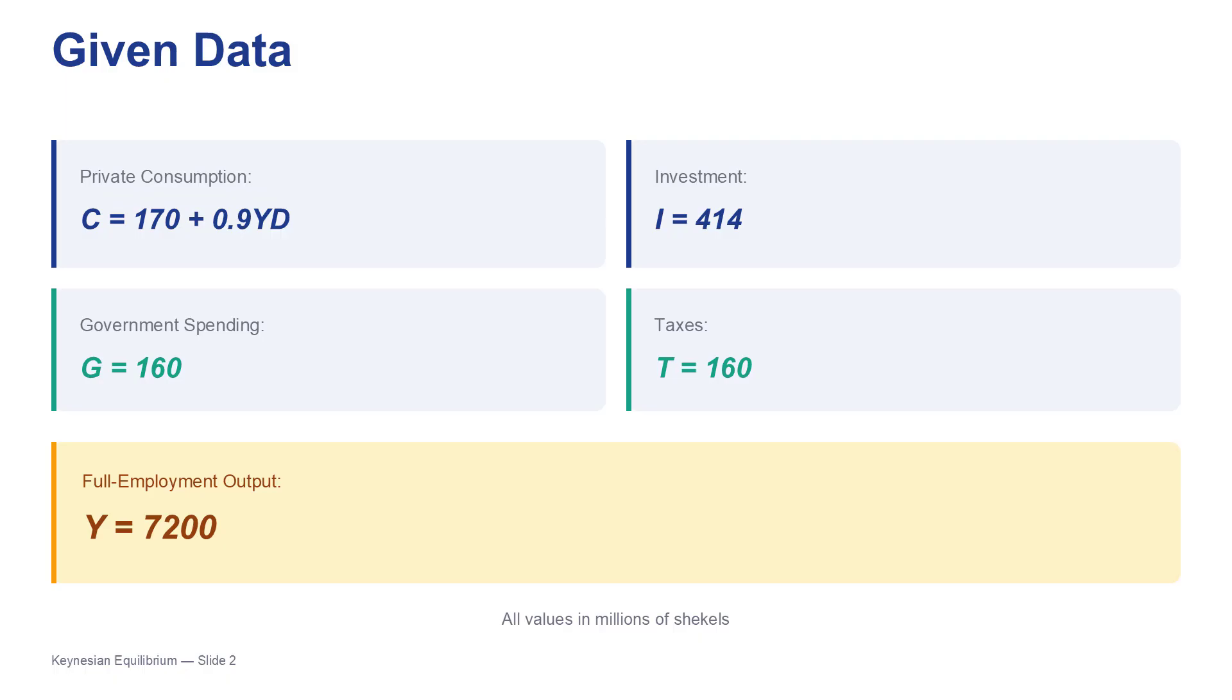So what are the other inputs? There are autonomous spending factors. So we have investment, or I, at 414. Government spending, G, is 160. And taxes, T, are also 160. And the big target, our goal, full employment output, YF, is 7,200. Right. So our immediate goal is to find where the economy is right now. We need to find the equilibrium point where total output, Y, equals total aggregate demand, AD.